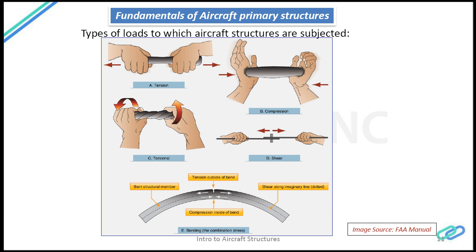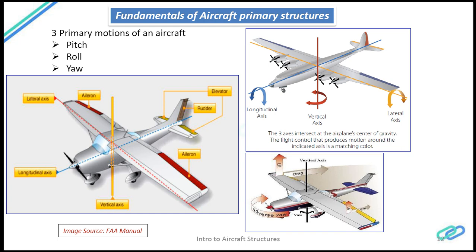Moving on to the next slide: an aircraft has three primary motions — pitching, rolling, and yawing. Pitching occurs during takeoff and landing, when the aircraft is going up or down. There are a few control surfaces — flat panels that control these motions — called aileron, elevator, and rudder. Aileron is responsible for rolling, elevator is responsible for pitching, and rudder is responsible for yawing.